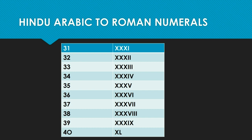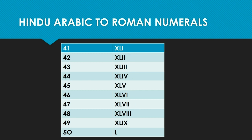Here you have the numerals from 31 to 40. Thirty-one will be 30 plus 1, so 30 is XXX and 1 is I, giving us XXXI. Similarly, for 32 you will do 30 plus 2 and place the Roman numerals for 30 and 2 together. You have to follow the same rule for all the numbers from 41 to 50.